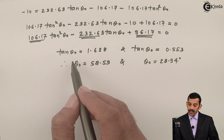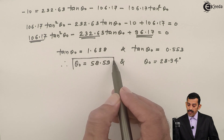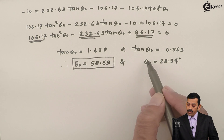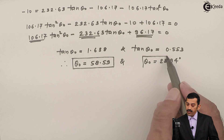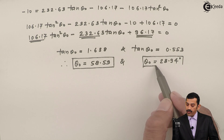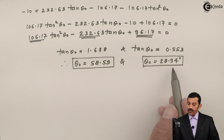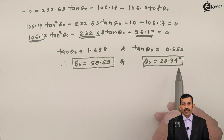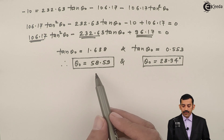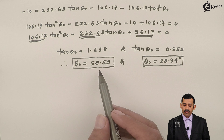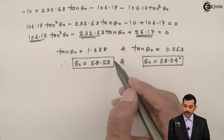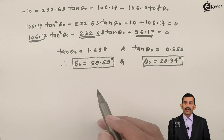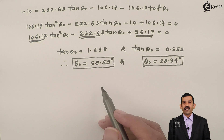There are two valid angles of inclination. If the shell is fired at 28.94°, it will hit the target at the given X and Y distance. Alternatively, if fired at 58.59° (which is greater than 45°), the shell also strikes the same location. Both angles are physically valid answers. Thank you.